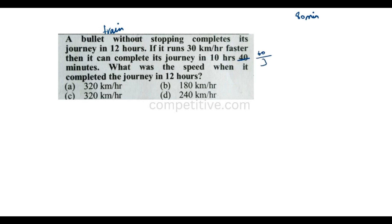We calculate: 60 divided by 3 into 2, divided by 3 into 2. With a 30 km/h speed increase, we get 350 divided by 3 into 2.